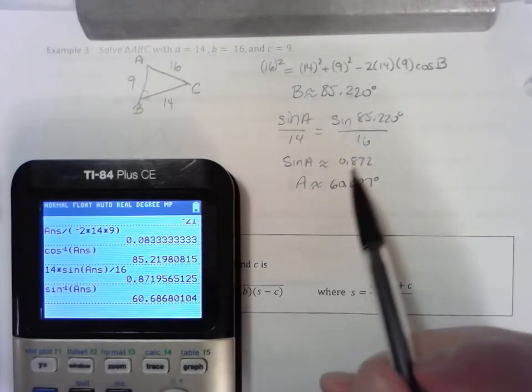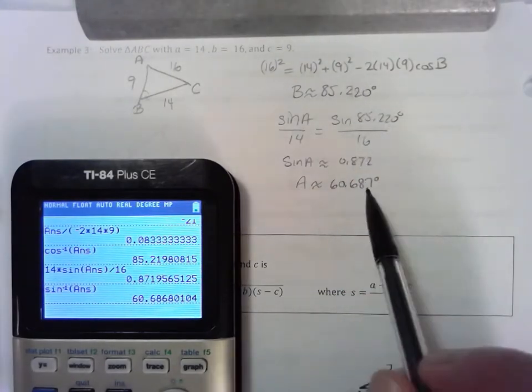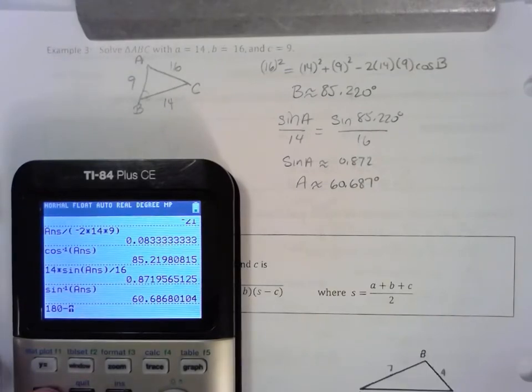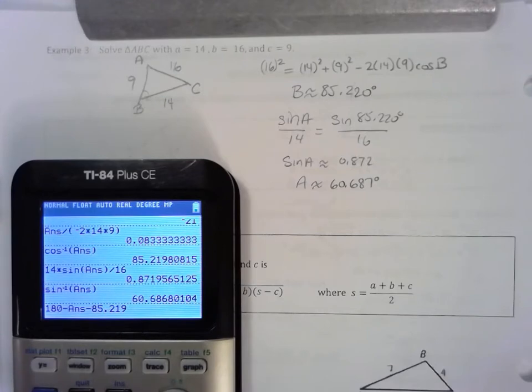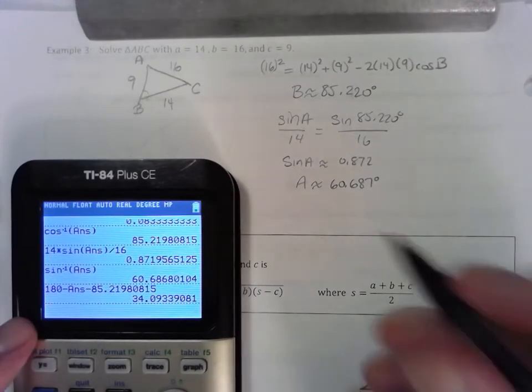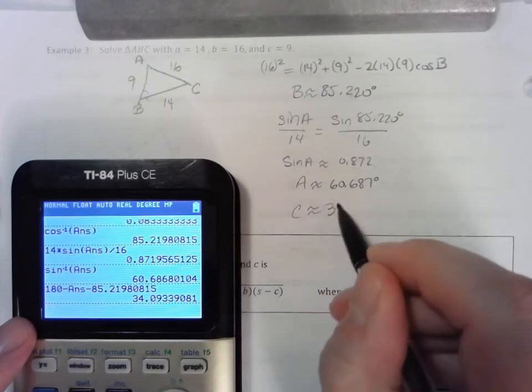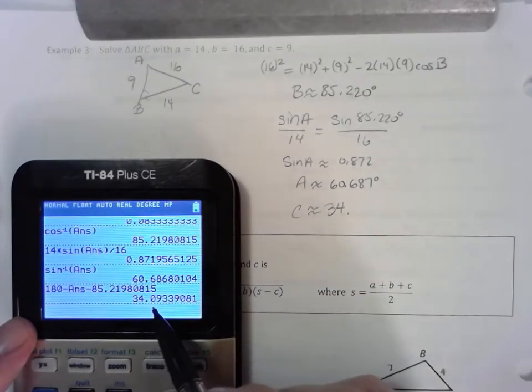Now our triangle sum theorem: adding these two together and subtracting them from 180 will give us our last angle. So that means the measure of angle C is approximately 34.093, and that solves this triangle.